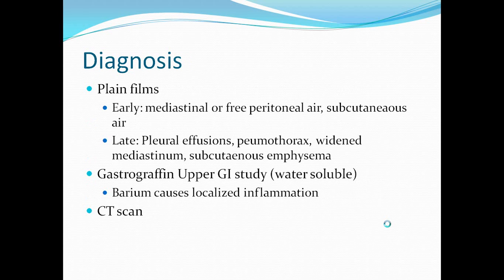To diagnose this condition: plain films are almost always abnormal in the late stage and sometimes in the early stage. Early on, you will see mediastinal or free peritoneal air and subcutaneous air. You can also feel subcutaneous emphysema in the neck or at the perforation site. Late signs include pleural effusions, pneumothorax, widened mediastinum, and subcutaneous emphysema on x-ray. For an upper GI study, use gastrografin rather than barium, since barium can cause localized inflammation. A CT scan is definitive in these cases.